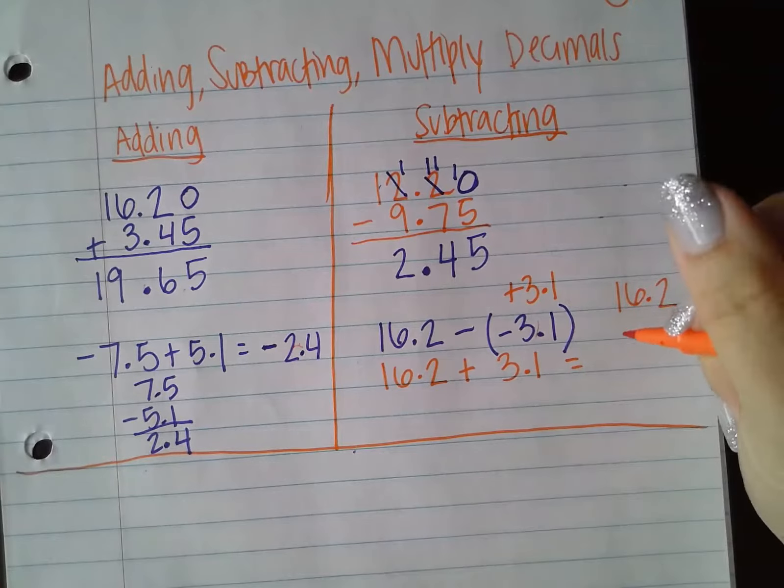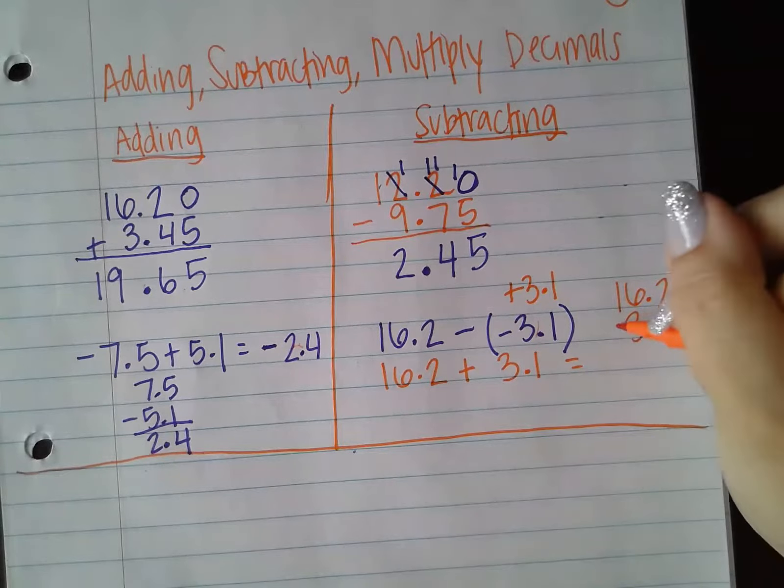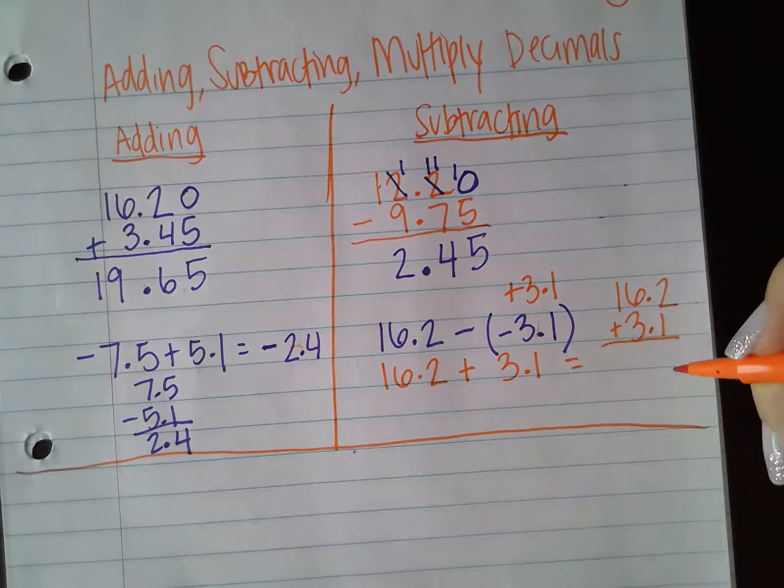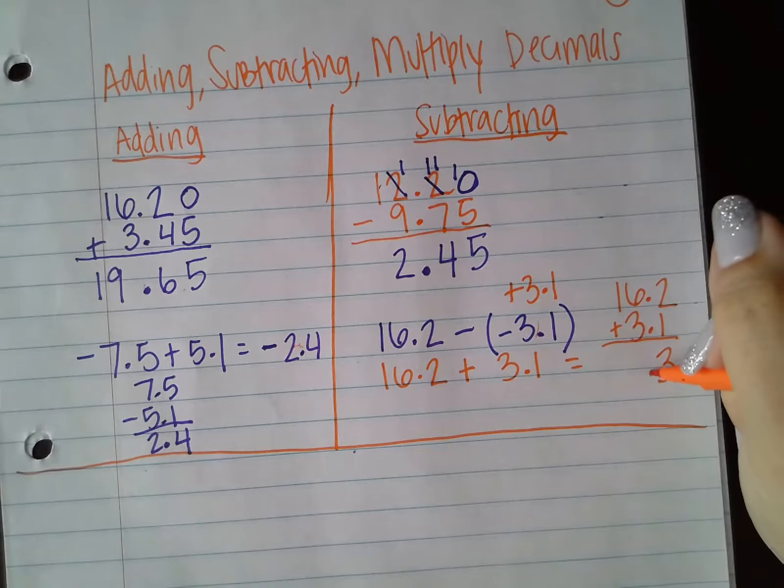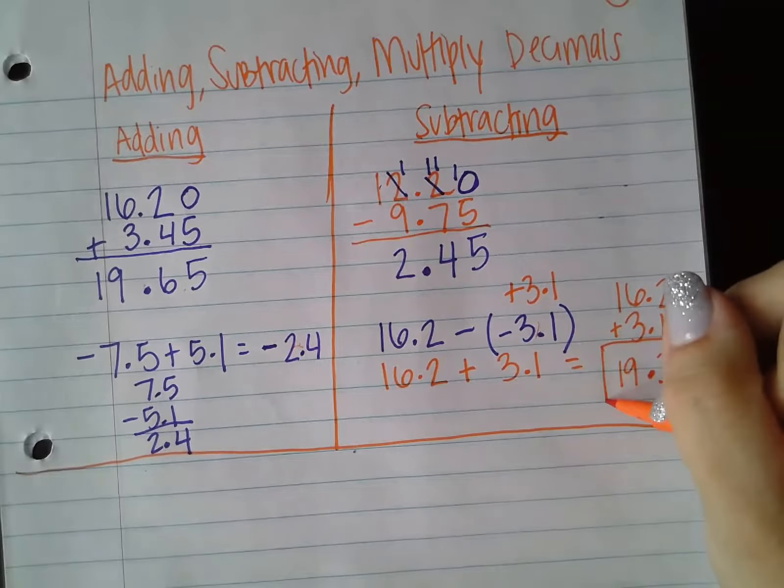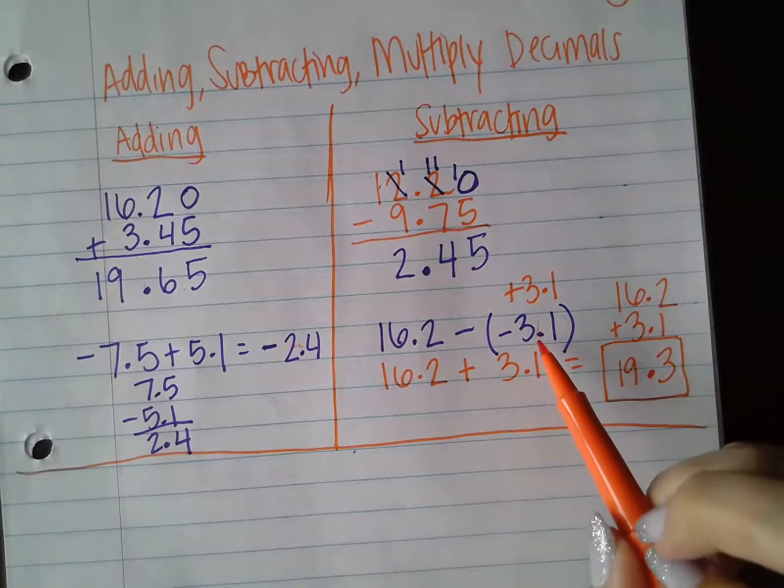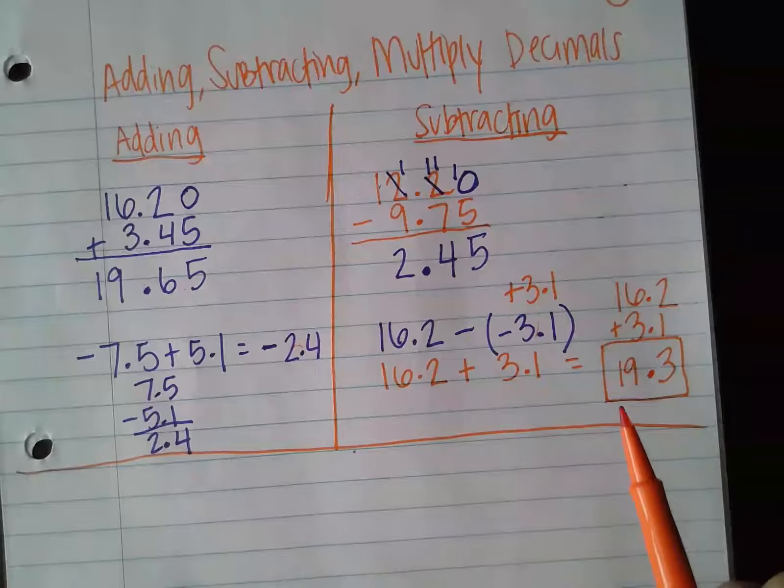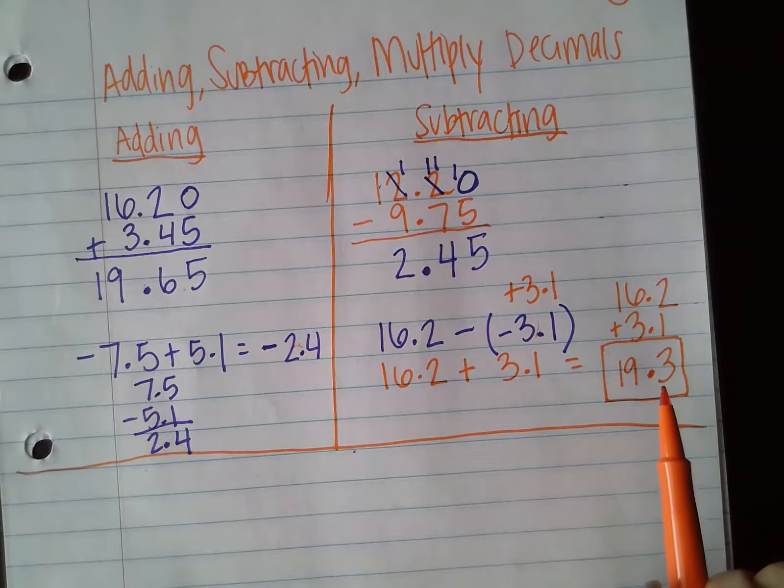So if we line up our place value, 16.2, 3.1. And if we add 2 plus 1 is 3, keep my decimal point. 16 plus 3 is 19.3. So that's actually going to be the answer. When we take away a negative, we're actually going to end up at this positive value of 19.3.